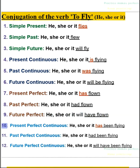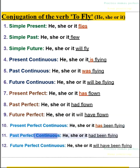10. Present perfect continuous — he, she, or it has been flying. 11. Past perfect continuous — he, she, or it had been flying. 12. Future perfect continuous — he, she, or it will have been flying.